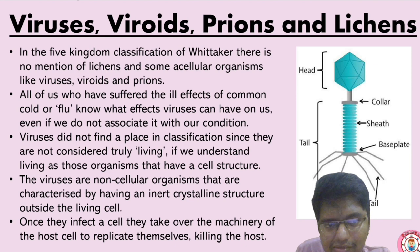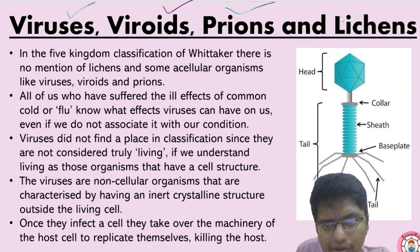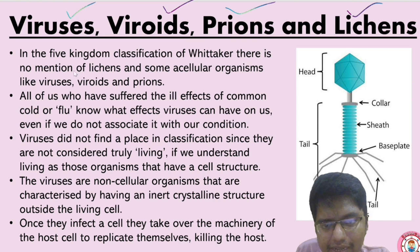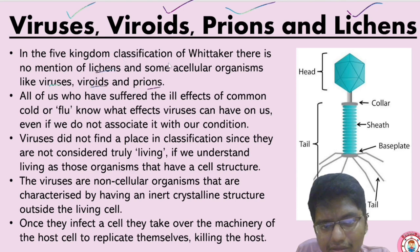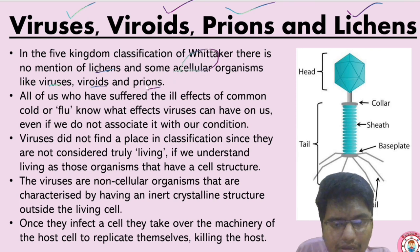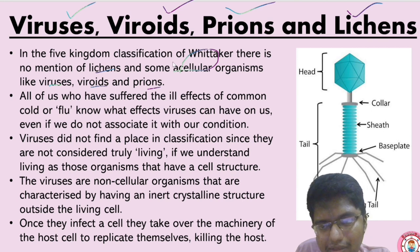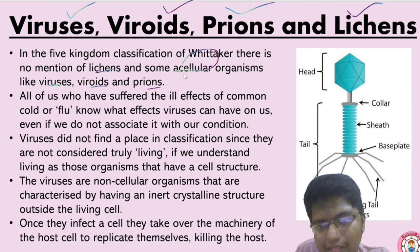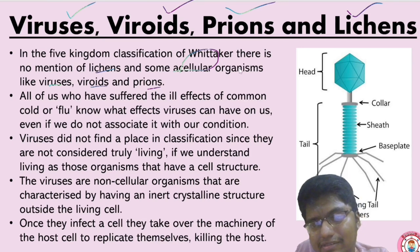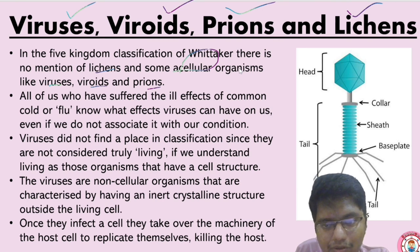Now let's see some other organisms — basically viruses, viroids, prions, and lichens. In the five-kingdom classification of Whittaker, there is no mention of lichens, and viruses, viroids, and prions were also not mentioned. These are acellular organisms — they are not present as cells; they have their unique structures.